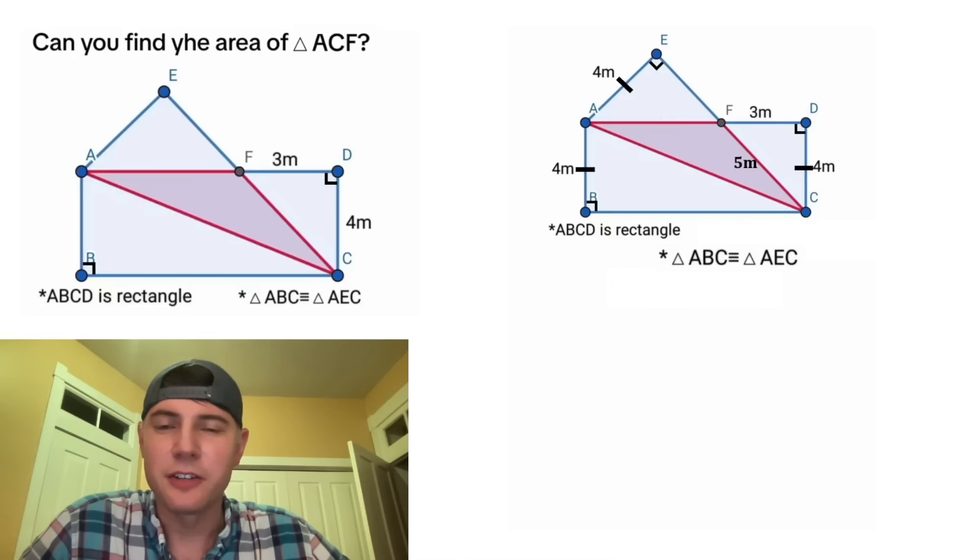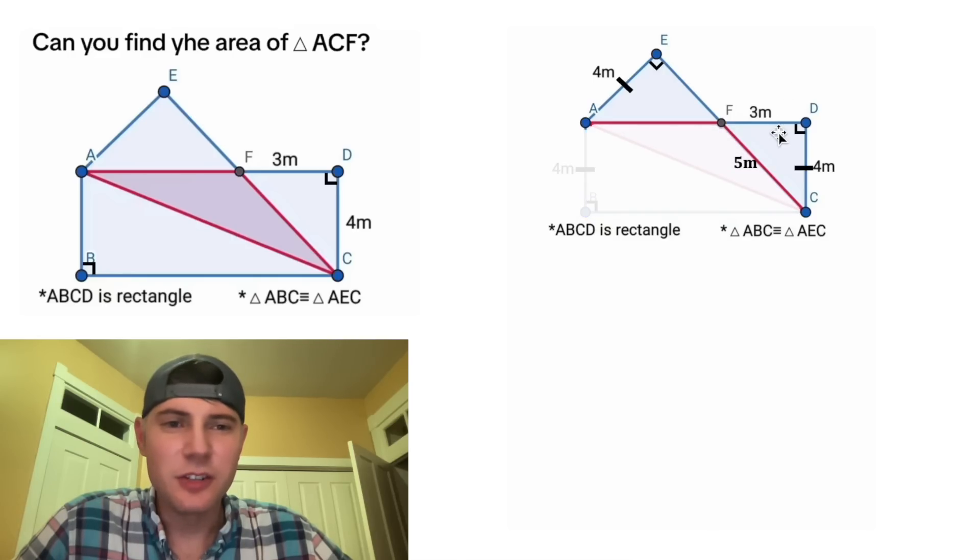These congruent triangles give us quite a bit of info. Next, let's focus on these two triangles. This angle and this angle are both congruent because they're vertical angles. And now we know that angle AFE is congruent to angle CFD. That's what we just found with the vertical angles. We know that angle E equals angle D because they're both right angles.